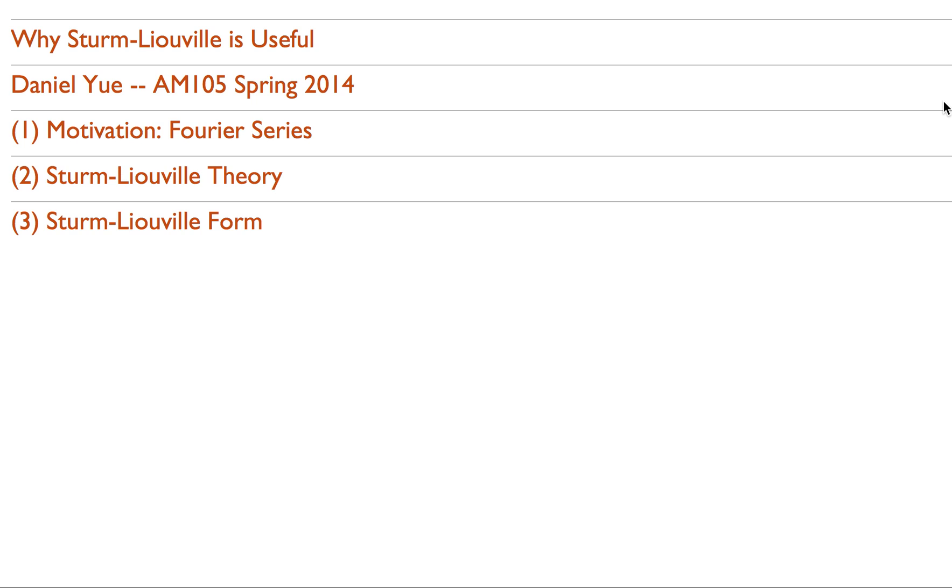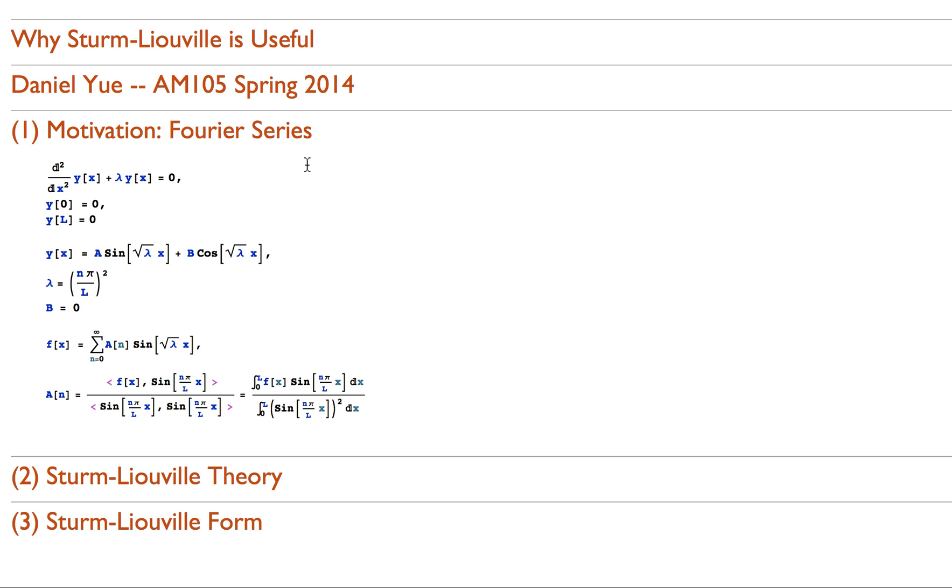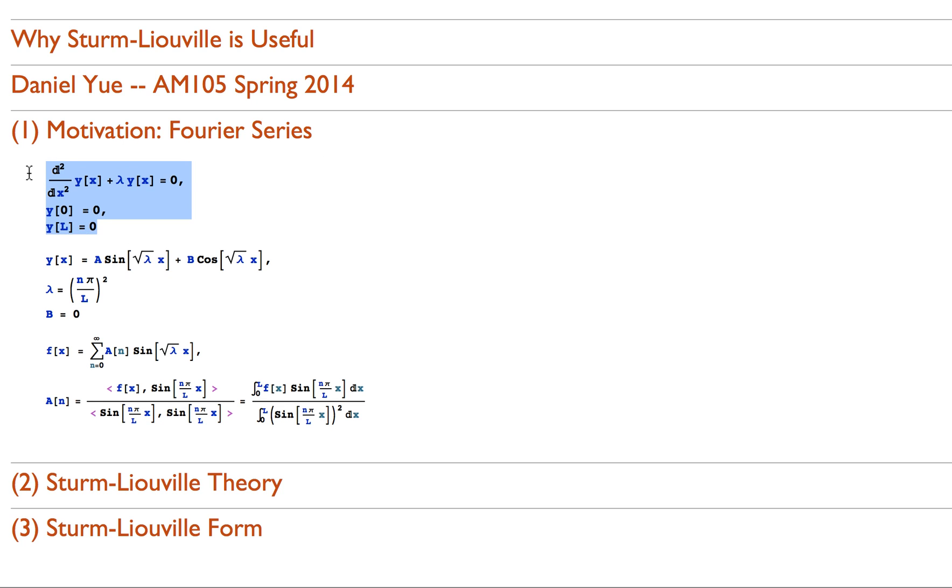Sturm-Liouville theory is a really beautiful theory that essentially is an extension of the spectral theorem from discretized vector spaces into continuous function spaces. If you don't know what that means, that doesn't matter, I'll explain that to you as I go. Our motivation for this problem is you should all know and love Fourier series by this point. In Fourier series, a problem goes as follows.